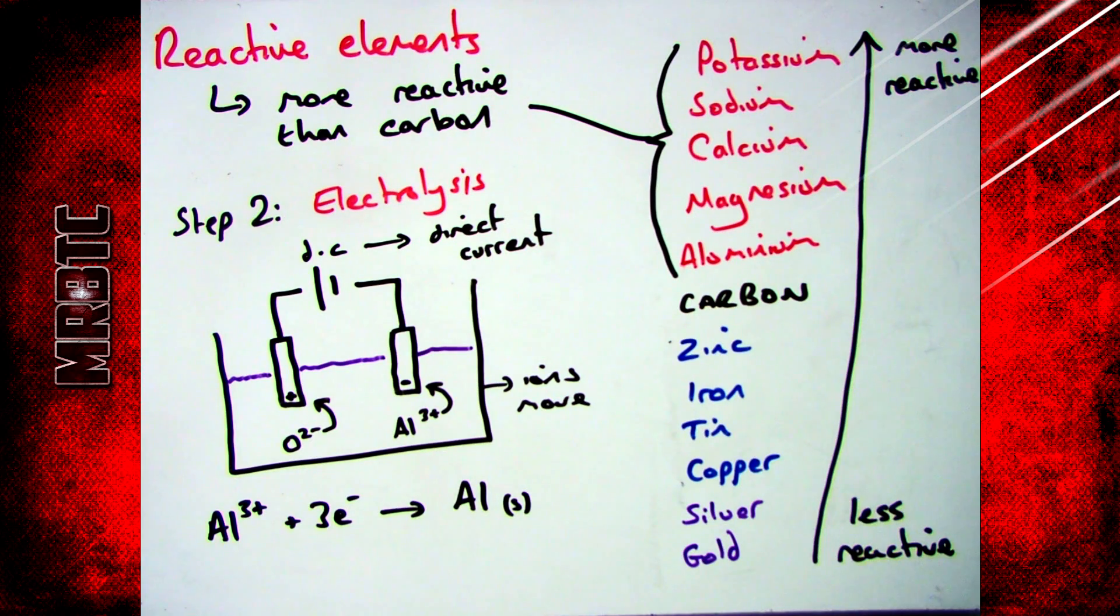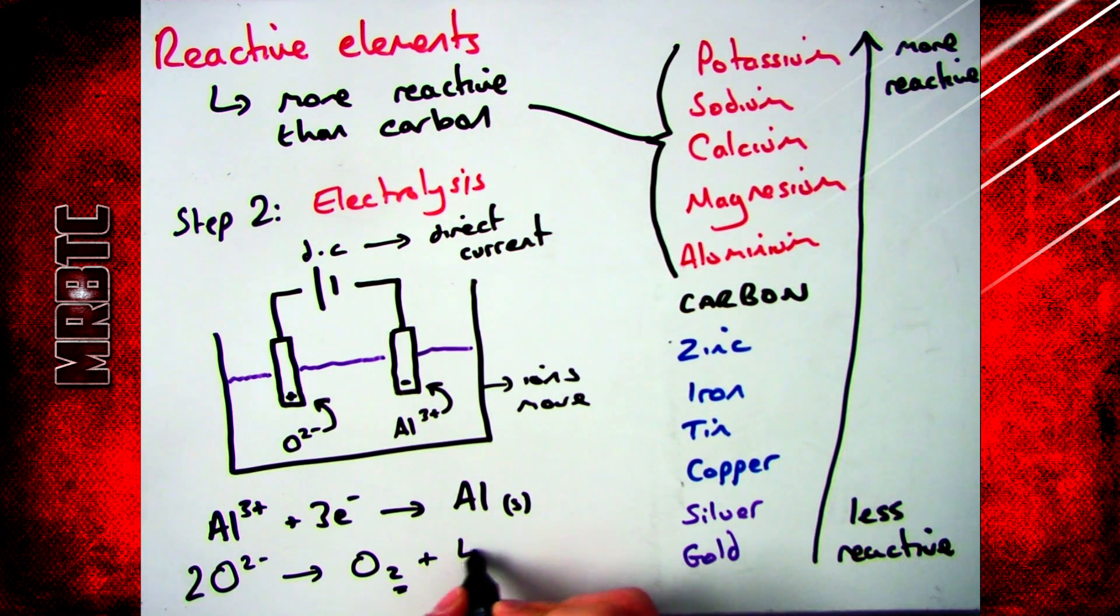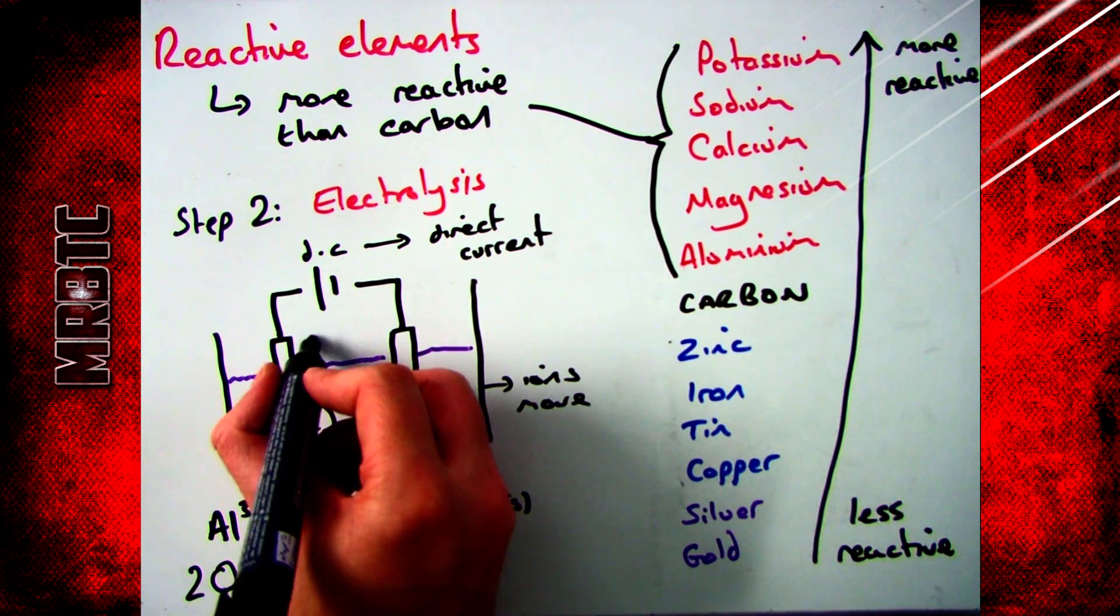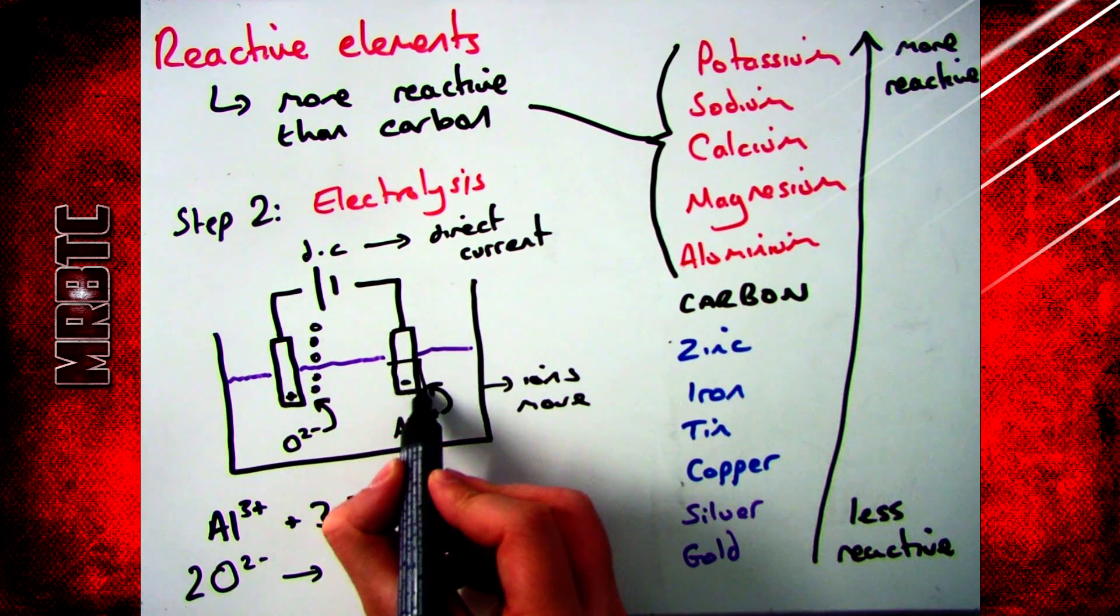Aluminum will gain three electrons and turn back into solid aluminum, and every oxygen ion will lose two electrons to go back to an oxygen atom. That will join together with another oxygen atom to make O2, meaning that four electrons are taken away in total. Don't worry about the half equations that I've drawn here, I will be covering that in another video if you're not sure.